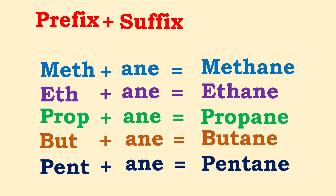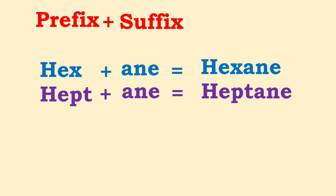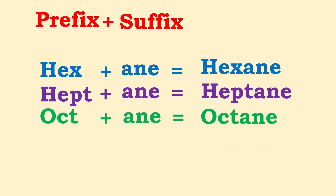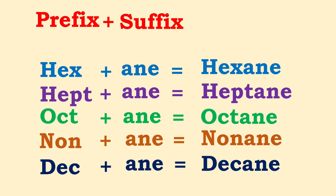We'll talk about hydrogen later, but going up to ten, the names of the alkanes are: methane, ethane, propane, butane, pentane, hexane, heptane, octane, nonane, and decane.